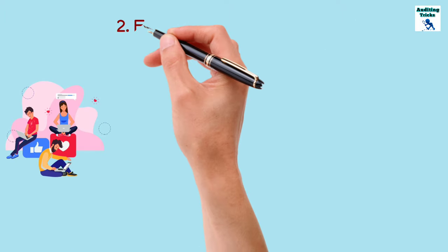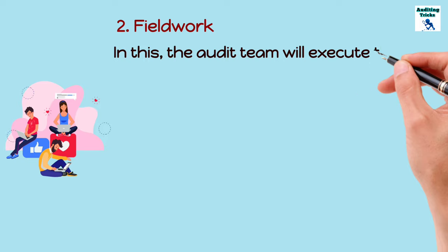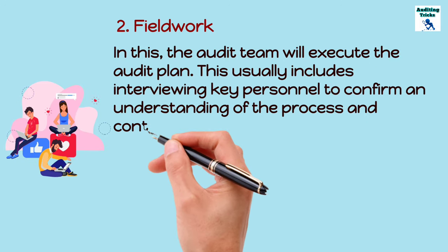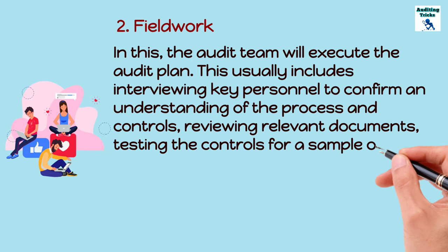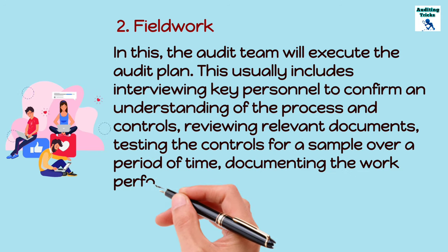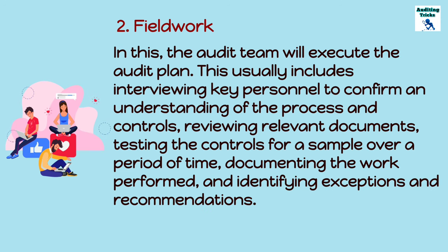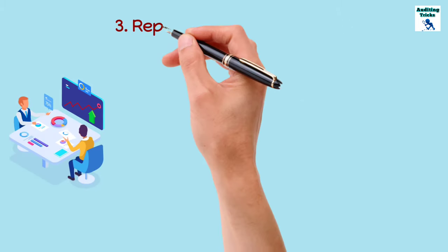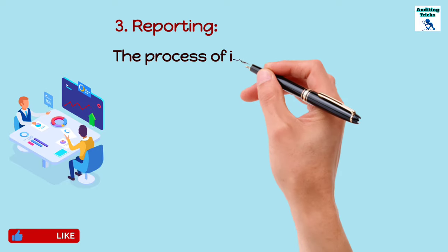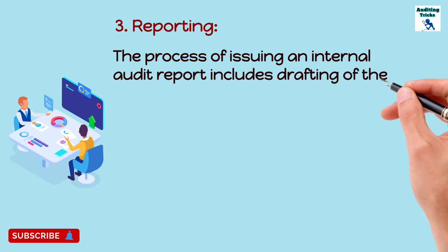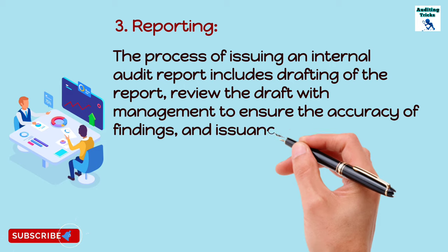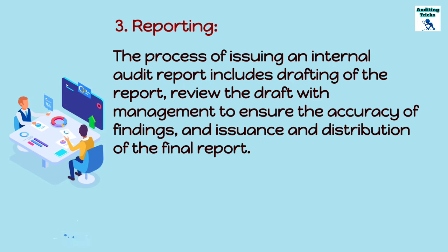The next phase is fieldwork, where the audit team executes the audit plan. This usually includes interviewing key personnel to confirm an understanding of the process and controls, reviewing relevant documentation, testing the controls for a sample over a period of time, documenting the work performed, identifying exceptions, and giving recommendations. The third phase is reporting, which includes drafting of the report, reviewing the draft with management to ensure accuracy of findings, and issuing and distributing the final report.